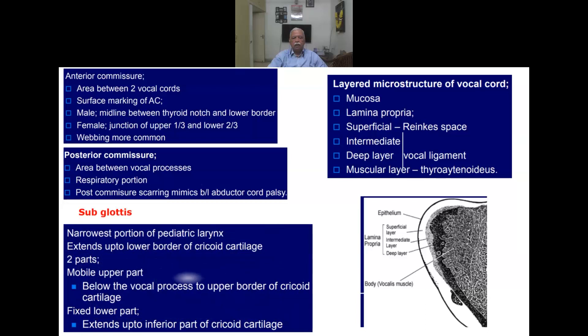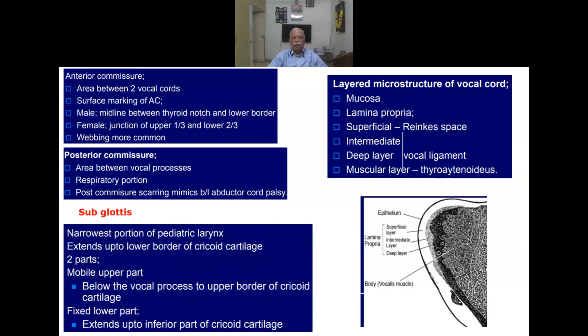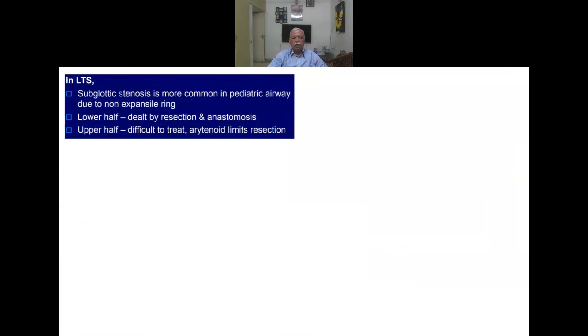The subglottic area is the narrowest portion in the pediatric larynx and extends to the lower border of the cricoid cartilage. It has two parts: a mobile upper part (below the vocal process to the upper border of the cricoid) and a fixed lower part extending to the inferior cricoid. Subglottic stenosis is more common in the pediatric airway due to the non-expansile ring of the cricoid.